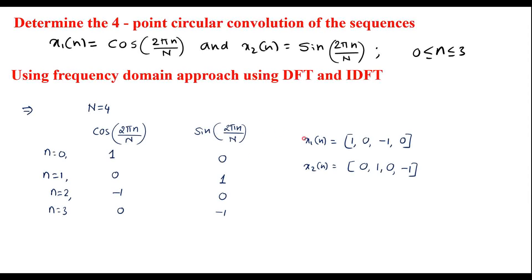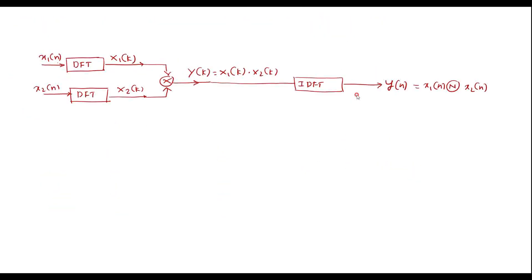Now let me find the circular convolution between these two sequences using the DFT and IDFT method, also known as Stokamp's method. In Stokamp's method, first we find the DFT of the first sequence x1(n) to get X1(k), and the DFT of the second sequence x2(n) to get X2(k). Then we multiply these two to get y(k), and apply the inverse DFT on y(k) to get the output y(n), which is the circular convolution of the two sequences.